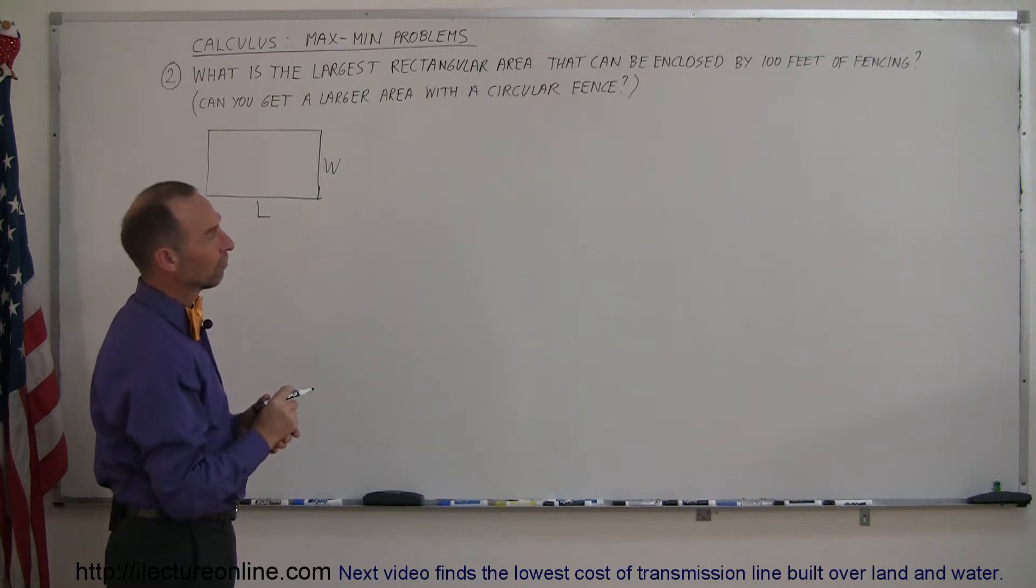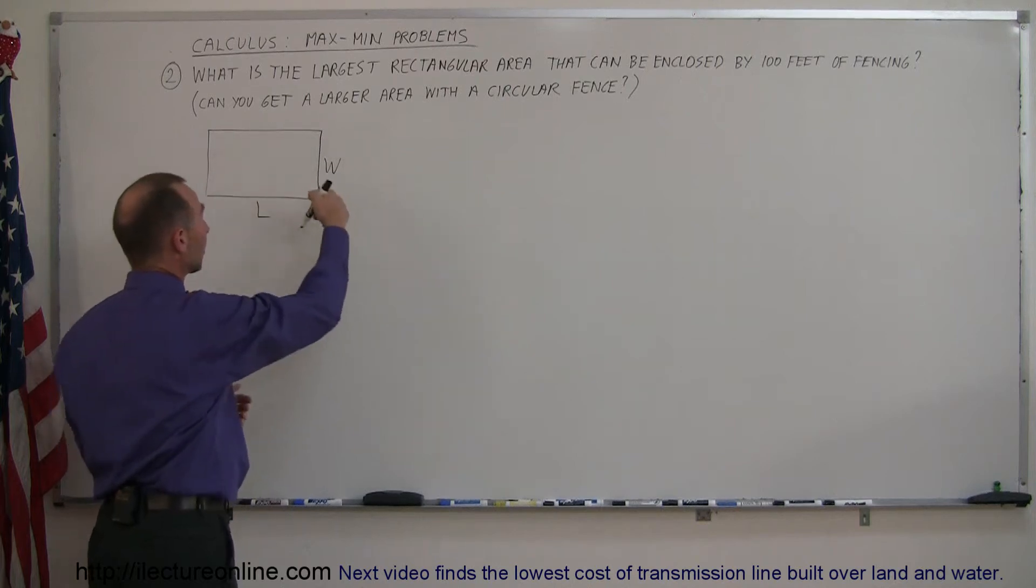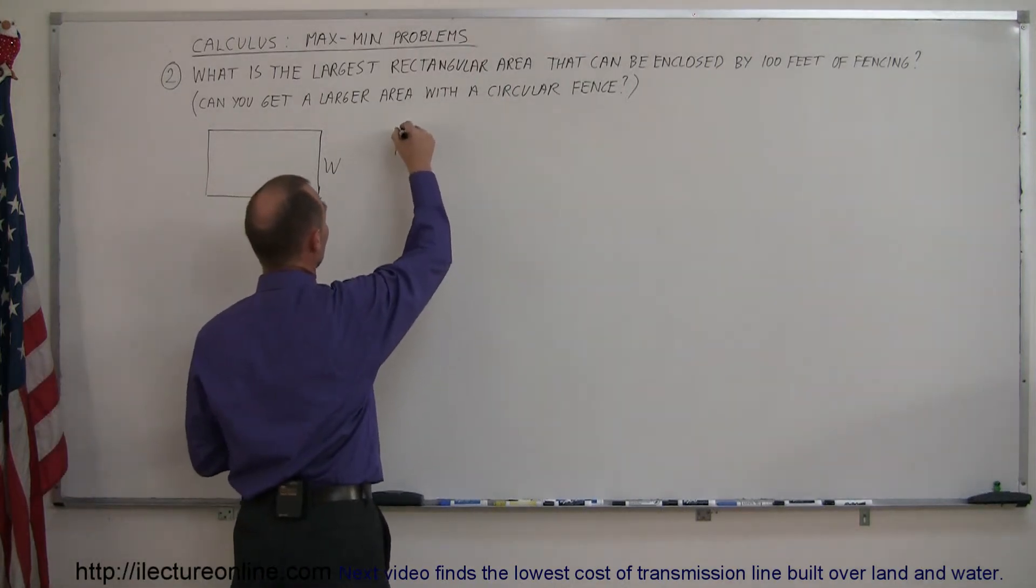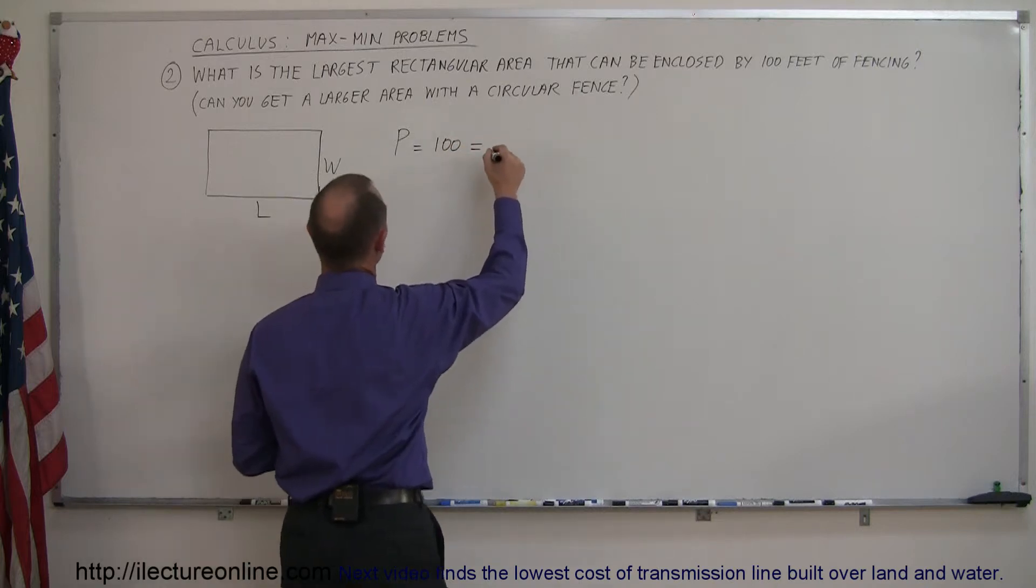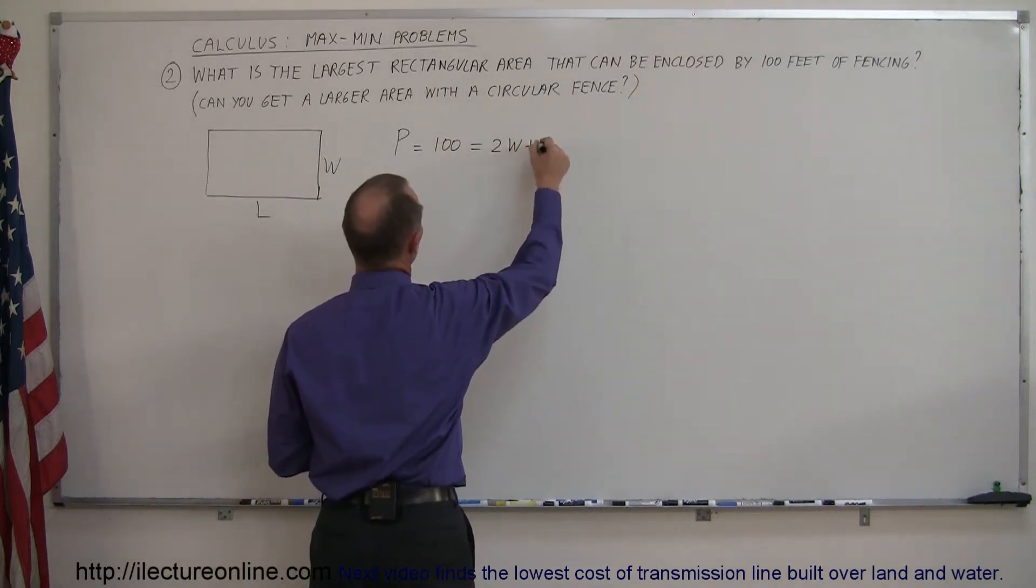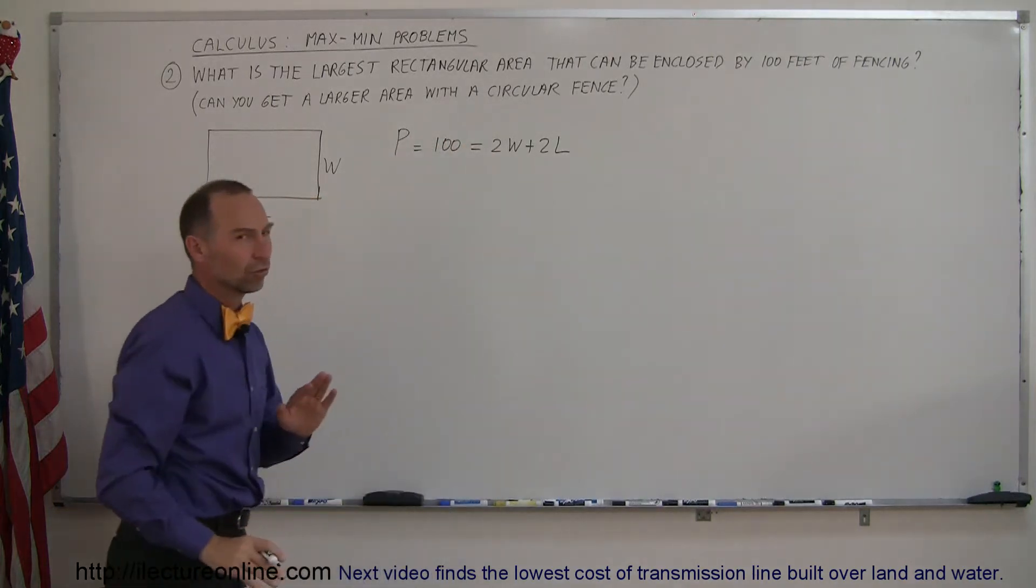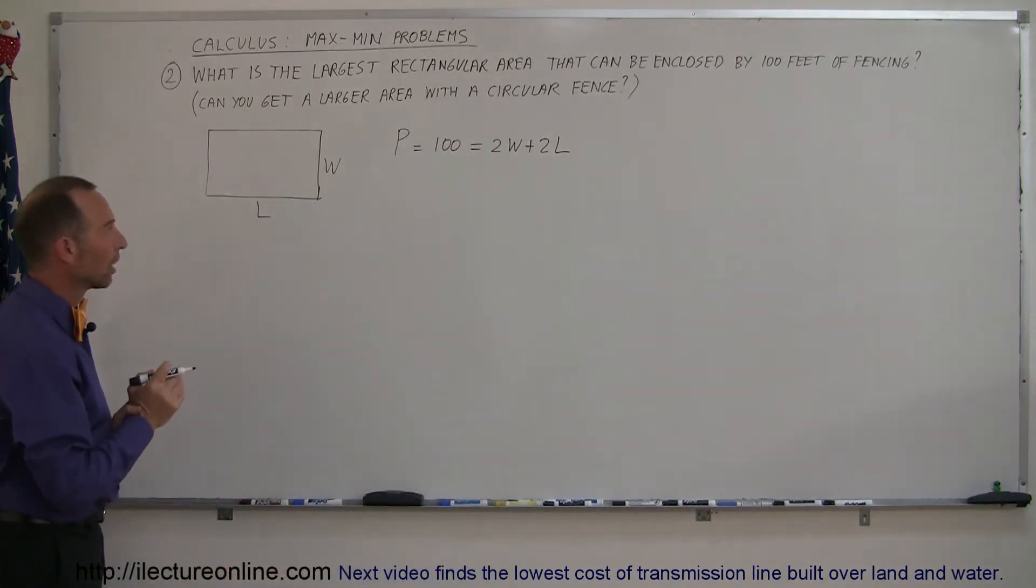and then based upon what they give us, that the fencing we have available is 100 feet long, that means that the perimeter must be 100 feet long. So the perimeter, which is equal to 100 feet, is equal to twice the width plus twice the length. And that then will be our constraint. So once you have a picture of what's going on here,